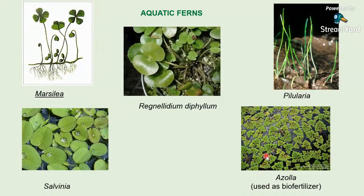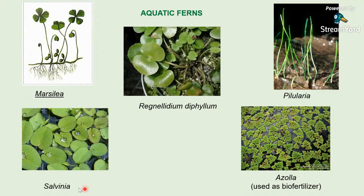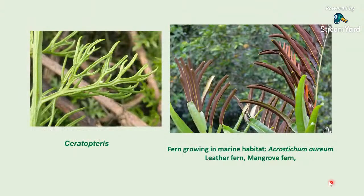These are aquatic ferns. Marsilea has cruciate arrangement of four leaflets on a long petiole, with sporocarps containing microsporangia and megasporangia encased within a capsule-like body. Regnellidium diphyllum is a Brazilian plant with only two leaflets on the petiole. Pilularia has only the petiole with no leaflet. Salvinia and Azolla are free-floating — Salvinia has bigger leaves but is rootless with leaves modified into root-like structures, while Azolla is smaller. Ceratopteris is an aquatic fern with a repeatedly forked frond bearing sporangia on the undersurface. Acrostichum aureum is the mangrove or leather fern, found in marine/salty water habitats common in Goa.